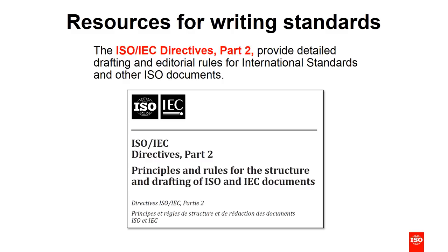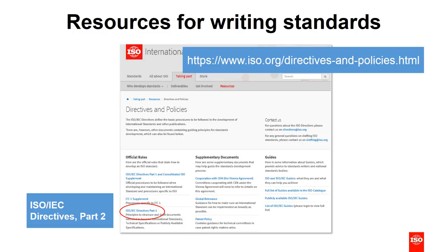The main resource for writing standards is the ISO IEC Directives Part 2. This is where you'll find all the drafting and editorial rules for ISO deliverables as well as IEC documents. You'll find it on iso.org — under the 'taking part' tab, go to the bottom of the page where you'll see a link to Directives Part 2.